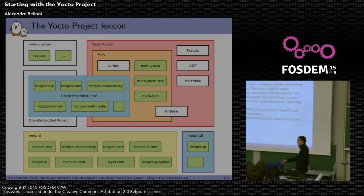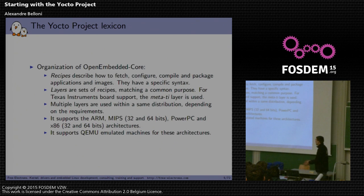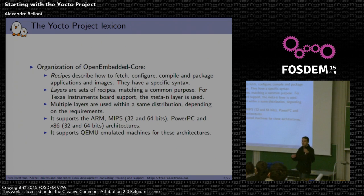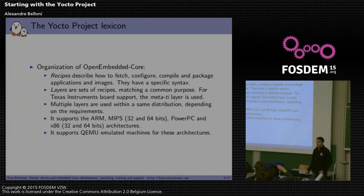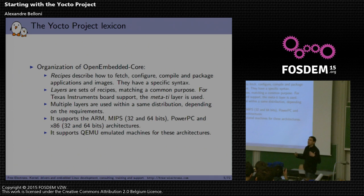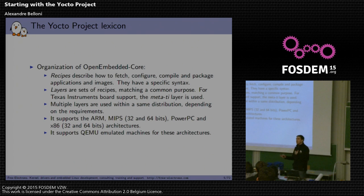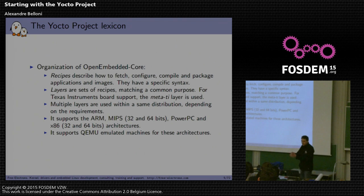The basic organization of OpenEmbedded-Core: you have recipes, which describe how to build a binary or a package. You fetch the sources, configure the build, compile, and then package the generated binaries. One recipe can generate multiple packages — for example, you can get the binary tools, documentation, man pages, or examples all packaged separately.